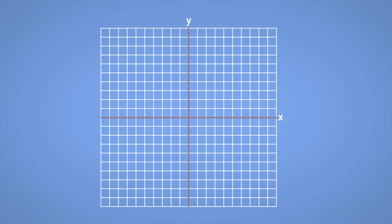When representing real situations on a grid, we can also change the name of the X and Y axes. Here the Y axis is given the name of the dependent variable, namely cost, whilst the X axis is labelled to show the independent variable, days.